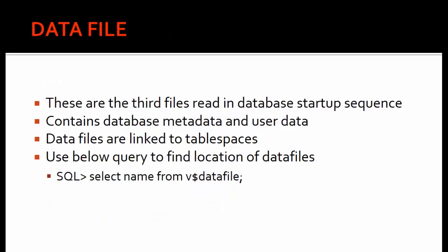The next type of files inside the database are the data files. In simple terms, these are the files which contain the user data or the system data itself. These are the third files read in the database startup sequence. They contain database metadata and user data — including base tables, views on base tables, data dictionary views, dynamic performance views, and also the user data. All this resides under the data files.